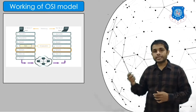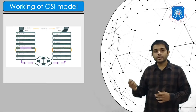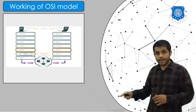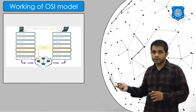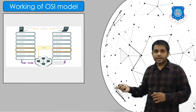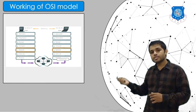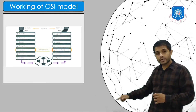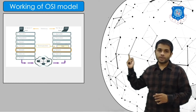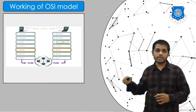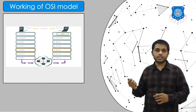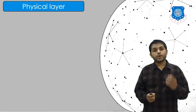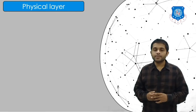As you can see in the animation, when data is sent it passes from the top layer to the bottom layer and travels through all the network devices to the receiver. When the receiver receives data, it follows from the physical layer to the application layer. So the direction of data is changed. Now let's see the working of each layer in brief.